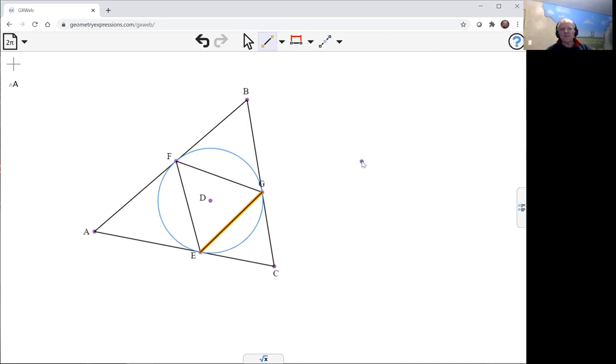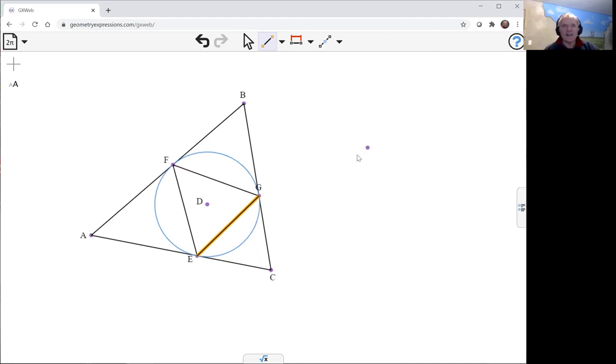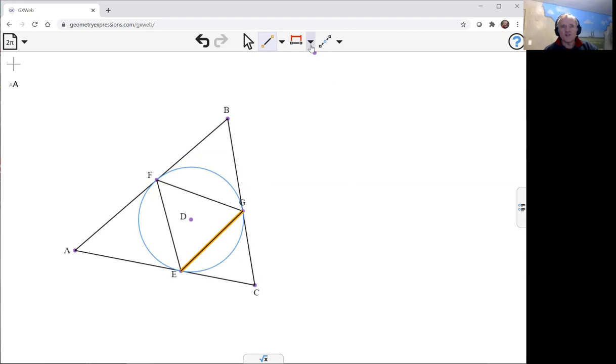Okay, so that's my incircle. Now I'm going to create an excircle. That's a circle that's tangential to the three sides but actually lies outside one of the sides. So there's my excircle.